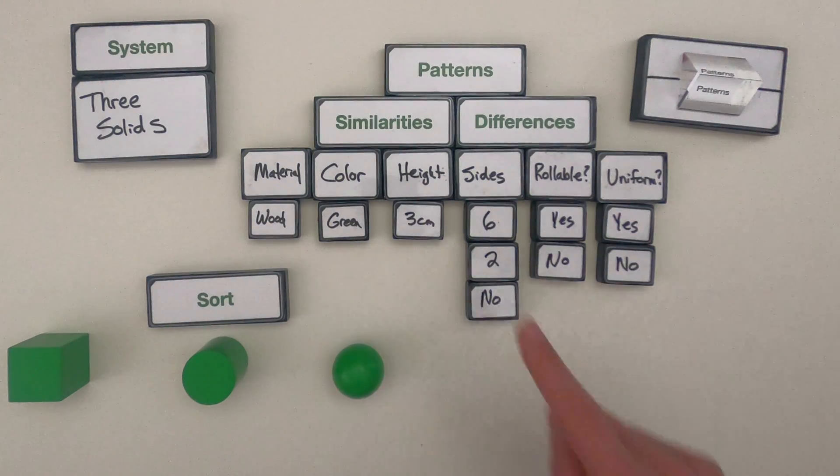And so the power of similarities and differences is it allows us to more carefully sort, classify, and analyze objects. So what I want to do is clean all this off, and then I'm going to give you an additional system. And what I'd like you to do is look for similarities and differences, and how we could use those to sort the material.